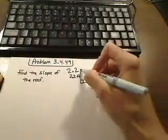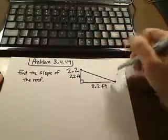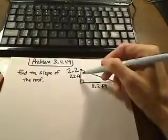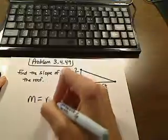Since we know that slope is rise over run, and if we're looking at this right here being the roof, then we have a rise. The rise would be the 2.2 and the run would be the 8.2.